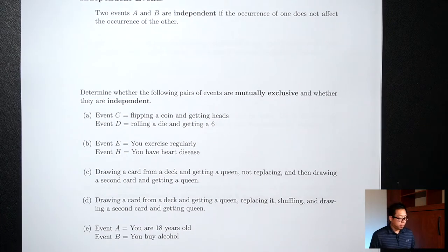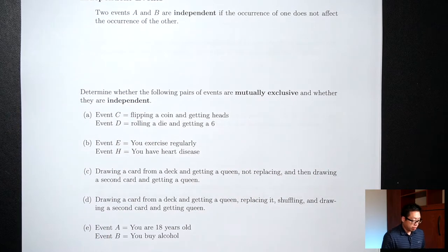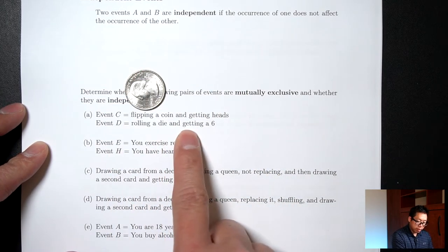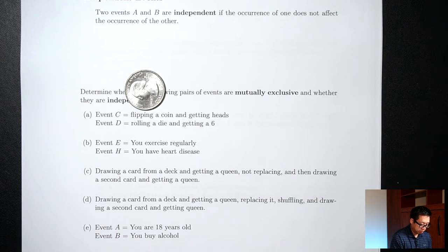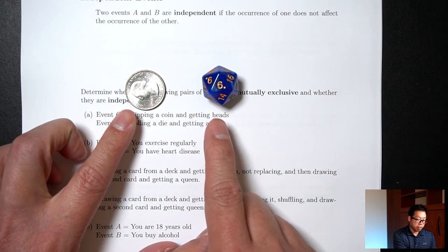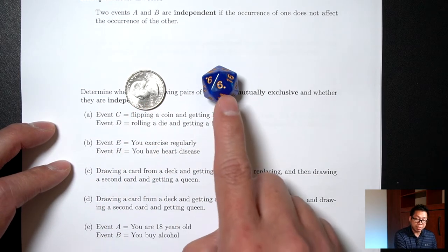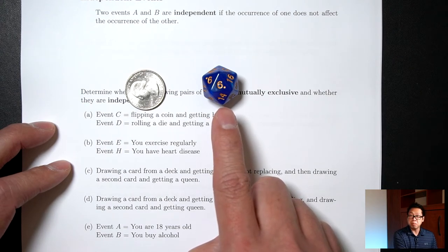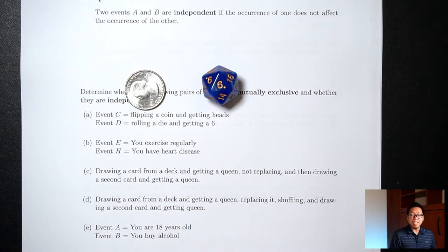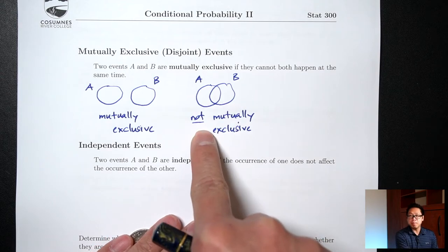Let's look at some examples. For each pair of events we're going to decide whether they are mutually exclusive and also whether they are independent. Part A: event C is flipping a coin and getting heads; event D is rolling a die and getting a six. First, are these two things mutually exclusive? Can you get heads on a coin and at the same time get a six on a die? Yes, you can — they're both happening at the same time. So since the answer is yes, they can happen at the same time, this is not mutually exclusive.